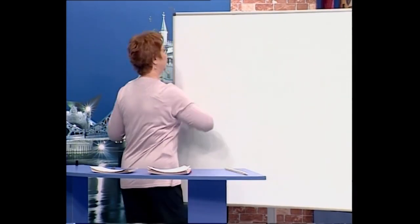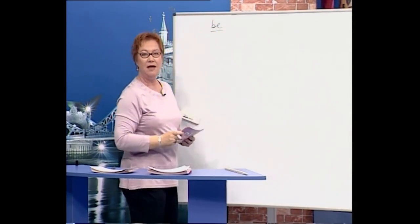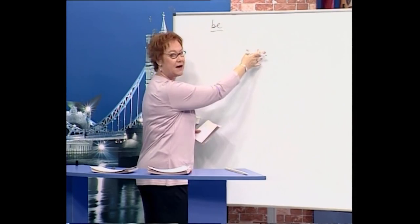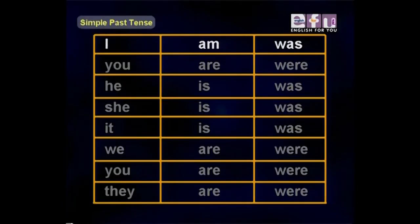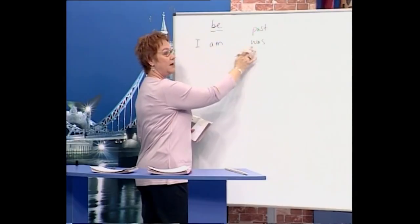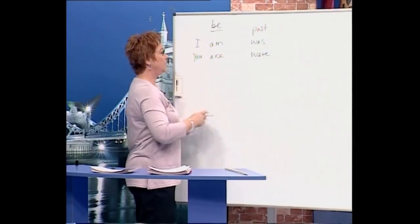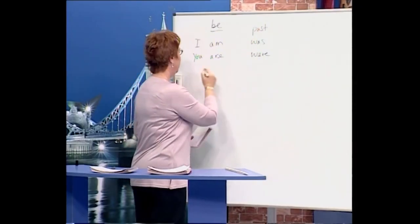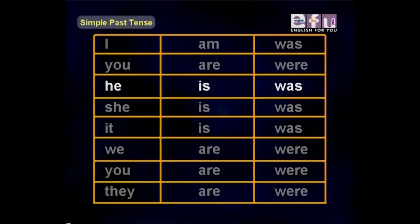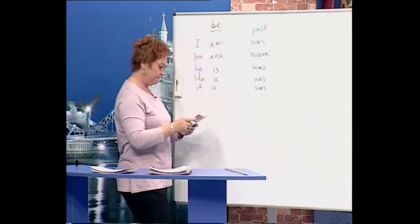First we're going to look at the verb be. We'll look at it in the present and the past. So we say I am, in the past we say I was. Next we have you are, in the past you were. He is, he was in the past. And of course she is, she was. It is, it was.